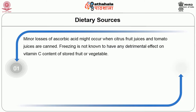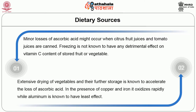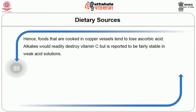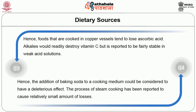Minor losses of ascorbic acid might occur when citrus fruit juices and tomato juices are canned. Freezing is not known to have any detrimental effect on the vitamin C content of stored fruits or vegetables. Extensive drying of vegetables and their further storage is known to accelerate the loss of ascorbic acid. In the presence of copper and iron, it oxidizes rapidly, while aluminum is known to have the least effect. Hence, foods cooked in copper vessels tend to lose ascorbic acid. Alkalies readily destroy vitamin C but it is reported to be fairly stable in weak acid solutions. The addition of baking soda to a cooking medium could therefore be considered to have a deleterious effect. The process of steam cooking has been reported to cause relatively small losses.